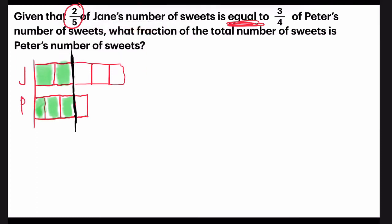Since Jane has two units and Peter has three, I will cut them into equal parts. Two and three, I can cut them into six and six. So to cut Jane into six parts, I need each unit to have three.